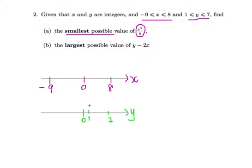So you have to color the dots like that. So it's between 1 and 7 and the other one is between minus 9 all the way to 8.